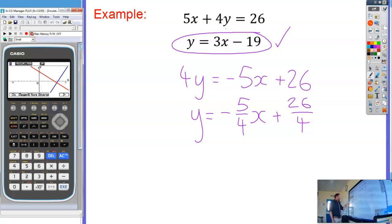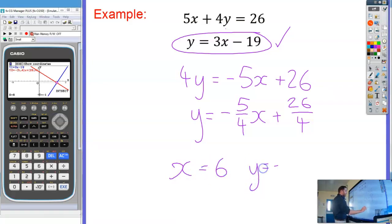So let's just click that again, G solve, and it gives you those coordinates. So that is how to do it graphically. X equals 6 and Y equals negative 1.